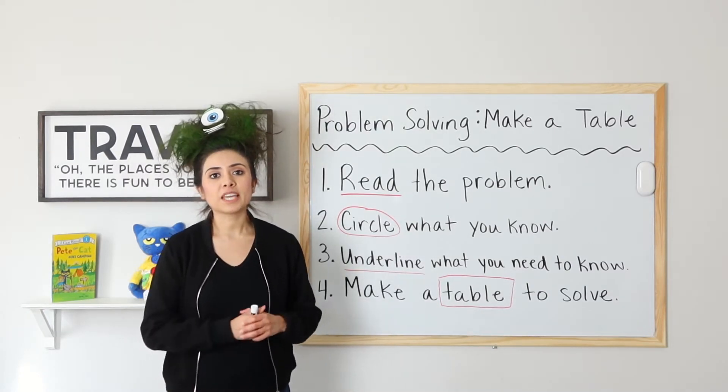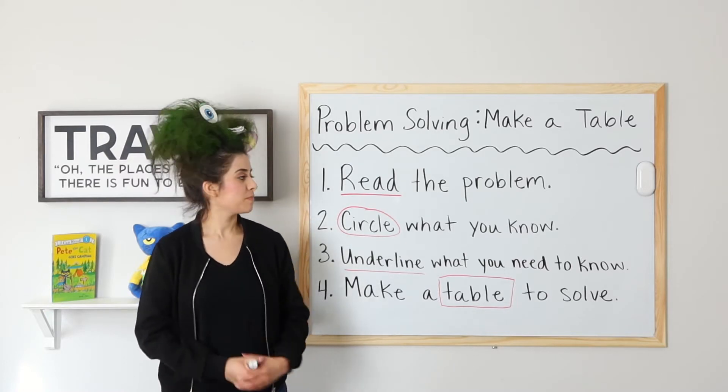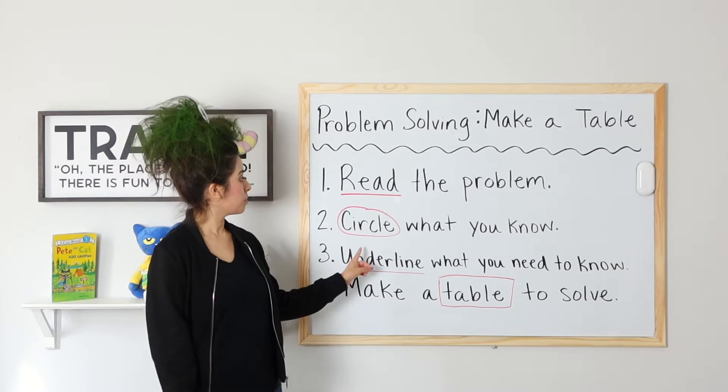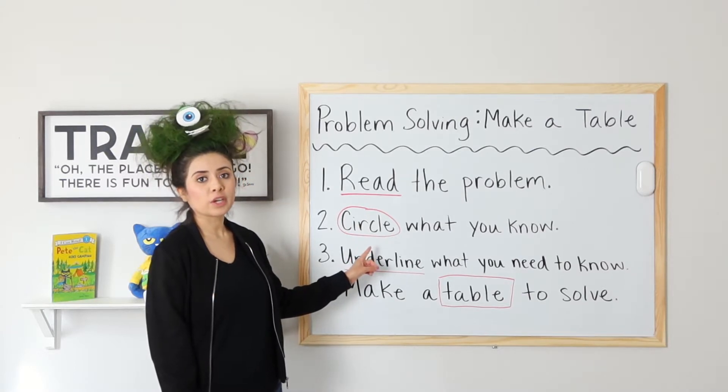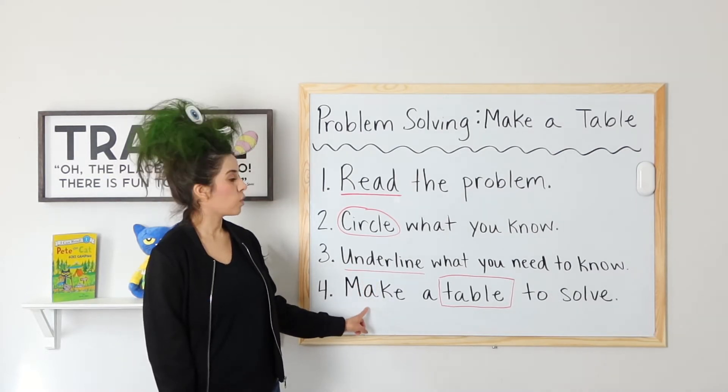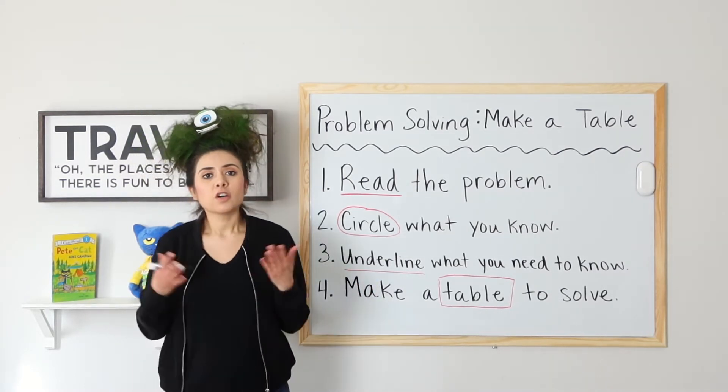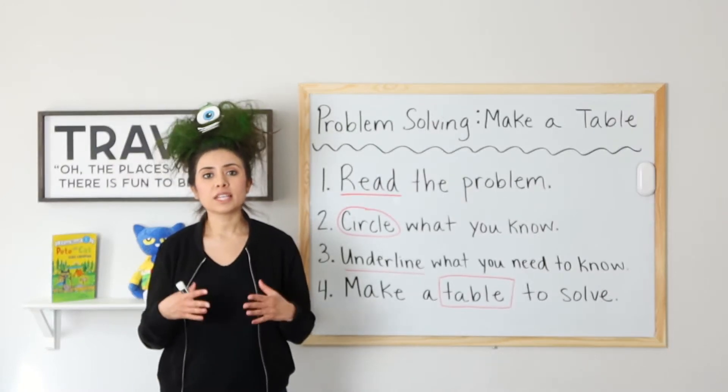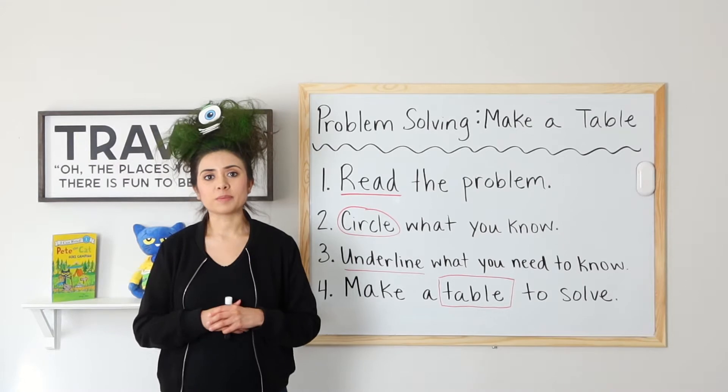Let's go ahead and look at the steps that we will take to solve these word problems. Number one, we will read the problem. Number two, circle what we know. Three, underline what we want to find out. And four, make a table to solve. Why make a table? Well, making a table helps us organize information that we may need to solve a problem.